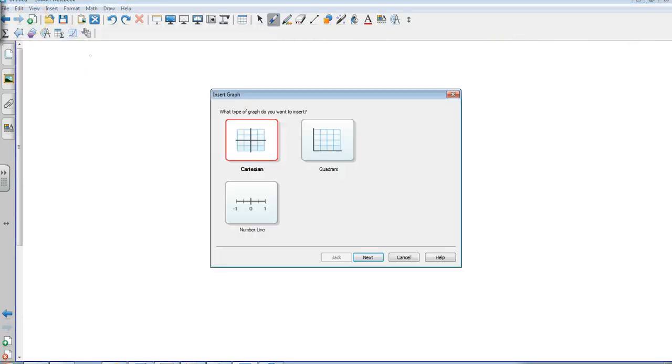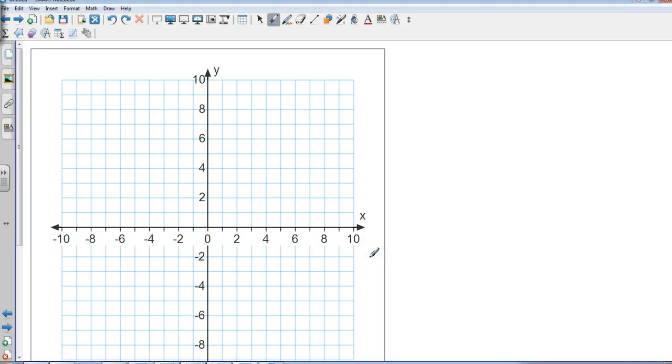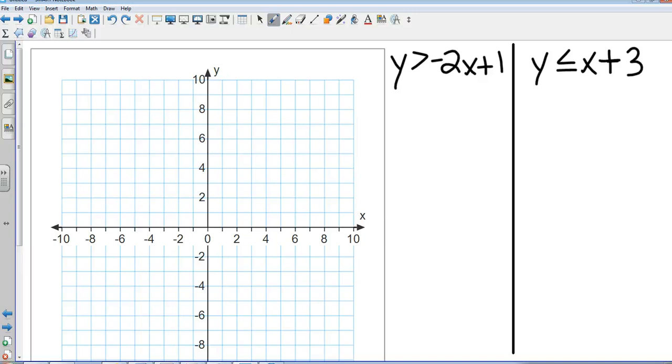So I'm going to give you an example and I want you to work it on your own, so hit pause. There are your two equations: y is greater than negative two x plus one, and y is less than or equal to x plus three. So go ahead and hit pause, graph those, shade them, and see if you can find out where the overlapping region is.